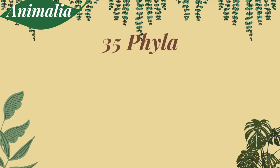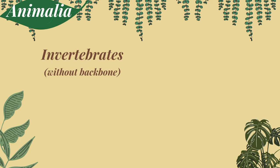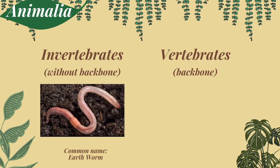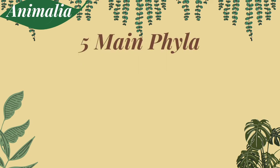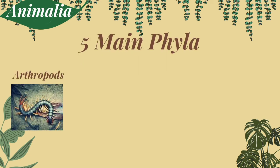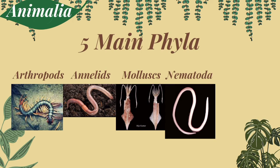There are 35 phyla in kingdom Animalia, divided into two divisions: the invertebrates, without backbone, and vertebrates, with backbone. For example, an earthworm for invertebrates and a monkey for vertebrates. There are 35 phyla in kingdom Animalia, but let me just discuss the five main phyla, which are the arthropods, annelids, mollusks, nematoda, and chordata.